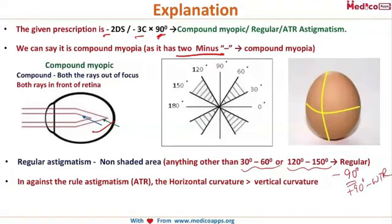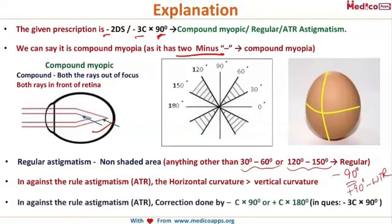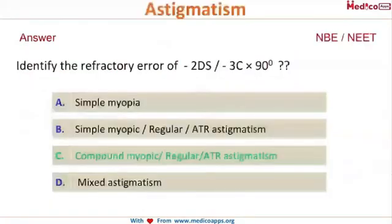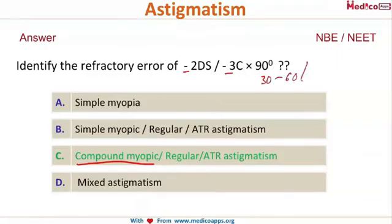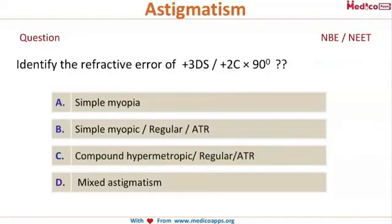So minus 90 is against the rule. Looking at minus 2 diopter and minus 3 diopter cylinder: two minuses give compound myopia; it is regular because it is not between 30 to 60 or 120 to 150; and against-the-rule because it is at negative 90 degrees. The answer is compound myopic regular against-the-rule astigmatism. Now let's practice another question: plus 3 diopter sphere, plus 2 diopter cylinder at 90 degrees.